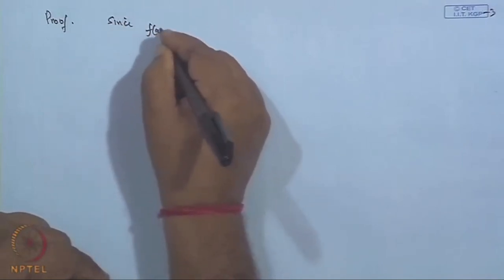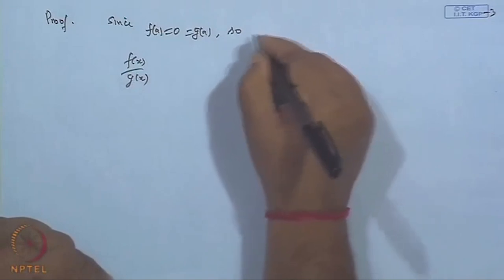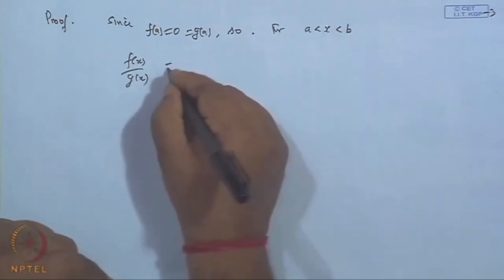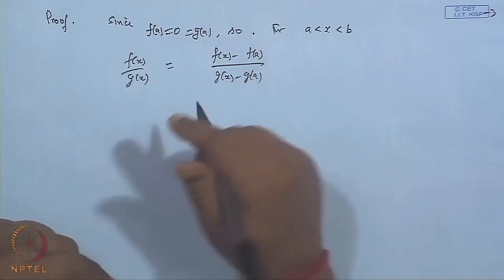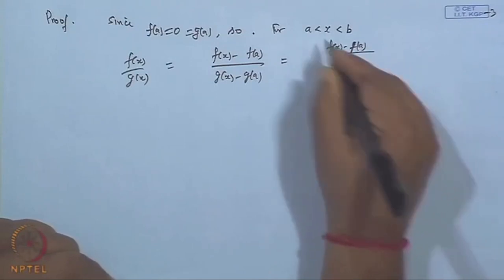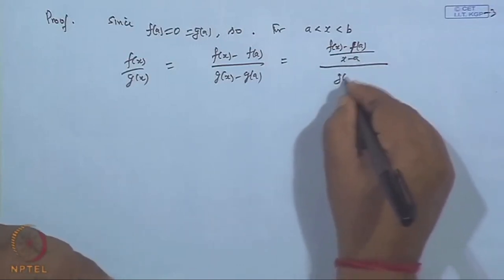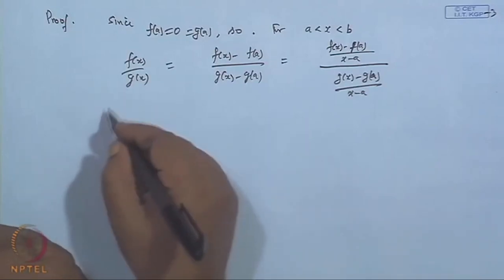The proof follows. Since f(a) = 0 and g(a) = 0, we can write f(x)/g(x) = [f(x) − f(a)] / [g(x) − g(a)] for x in (a, b). This can be written as [f(x) − f(a)]/(x − a) divided by [g(x) − g(a)]/(x − a), since x > a. Now, taking the limit as x→a.